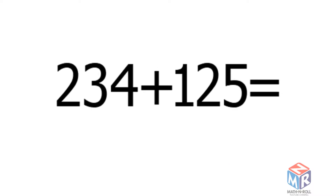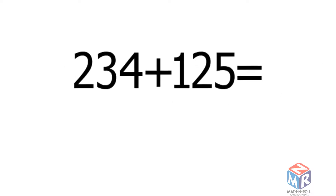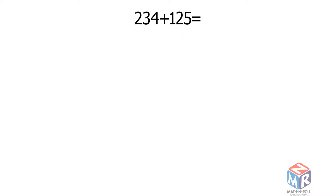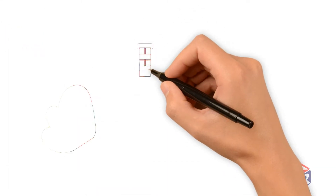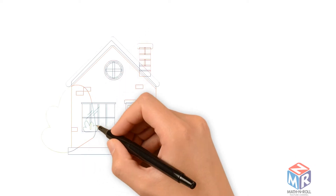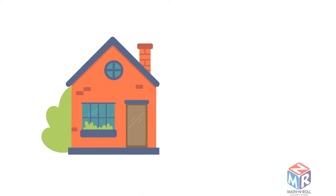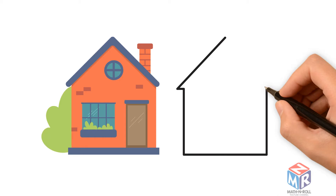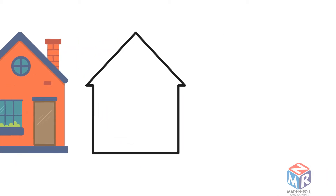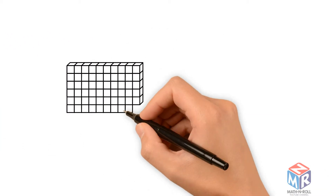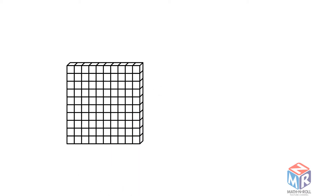How do we draw 234 plus 125? When you draw a house, you can draw it with a lot of detail and color it to make it look nice, or you can get the same idea with an outline. This makes it quicker for you to draw. You can do the same with math.